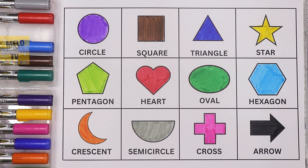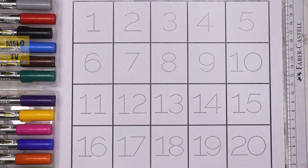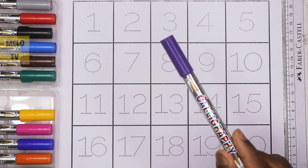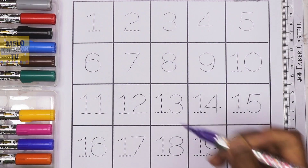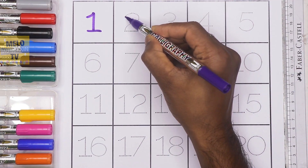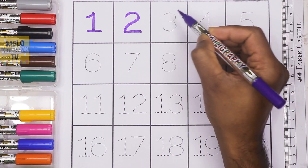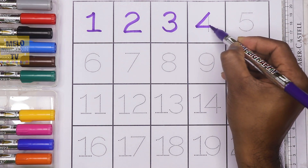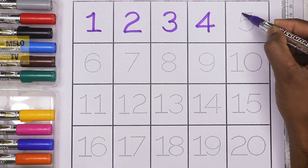So we have completed our shapes and colors. Now we'll go for numbers from 1 to 20. I'll take purple color for the first line. This is number 1, number 2, 3, 4, 5.